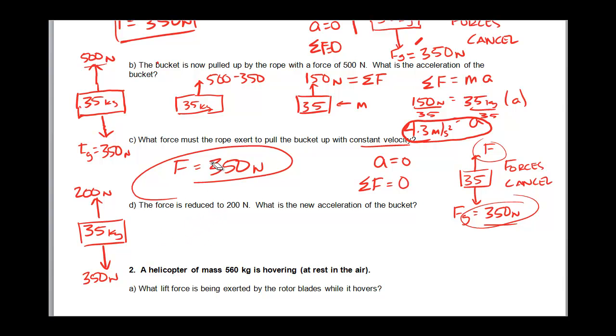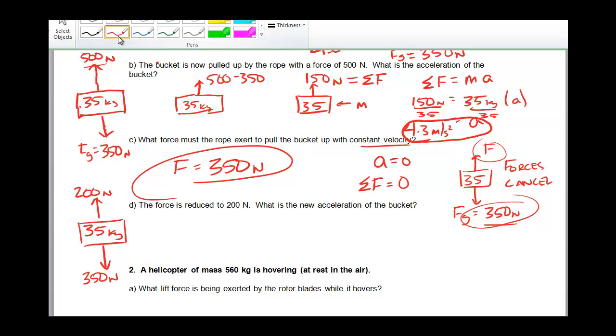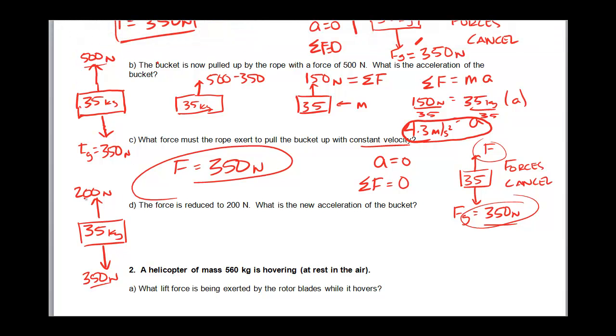I did that step wrong. Forgive me. Which force is going to win? The 350 down or the 200 up? That's right. The 350 down wins. So my net force is going to be 350 minus 200. And the acceleration is going to be that way. So I've got 35 kilograms, and it has a downward force of 150 newtons acting on it. The acceleration is down.